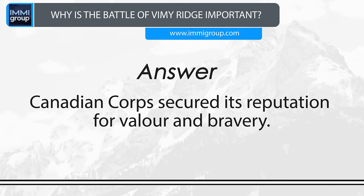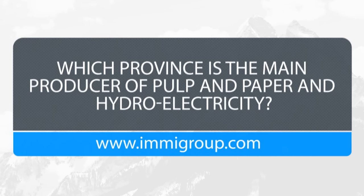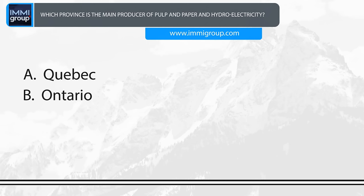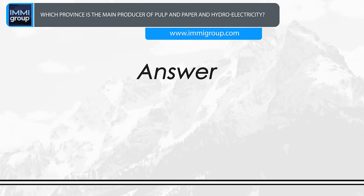Which province is the main producer of pulp and paper and hydroelectricity? A. Quebec. B. Ontario. C. British Columbia. D. Manitoba. Answer: Quebec.